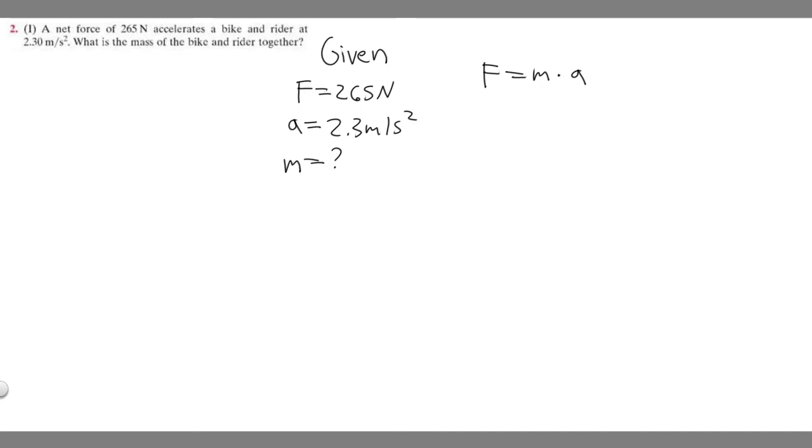So if we want to manipulate this and solve for mass, all we have to do is divide both sides by A. And we'll get that M equals F over A.